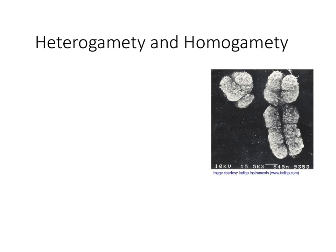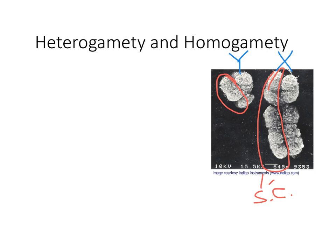What do you think we have on the right side of the screen? X and Y chromosomes — the big one is the X chromosome and the little one is the Y chromosome. This is an electron micrograph, not the usual way we look at chromosomes. They're not called X and Y because they actually look like those letters. At metaphase, each chromosome has two sister chromatids, though you can't easily see the short arm of the Y.